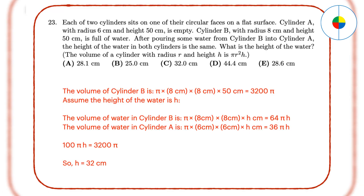Question 23: This is a little bit complex. The total water is the same as the volume of cylinder B, which is 8 times 8 times pi times 50, which is 3,200 pi. After some water is poured from cylinder B into cylinder A, the total volume remains 3,200 pi. Let H cm be the height of water in each cylinder when equal. The volume in cylinder B is 64 pi H and in cylinder A is 36 pi H. Solving for H, the answer is 32.